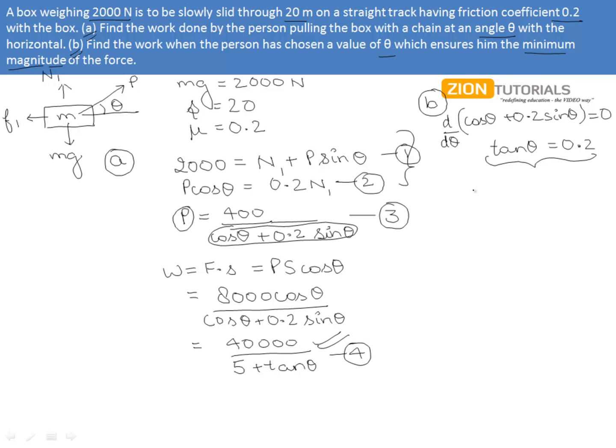Putting back this value of tanθ in the work expression, that is equation number 4, we can say that work done equals 40,000 over 5 plus 0.2, that is approximately equals to 7692 J.